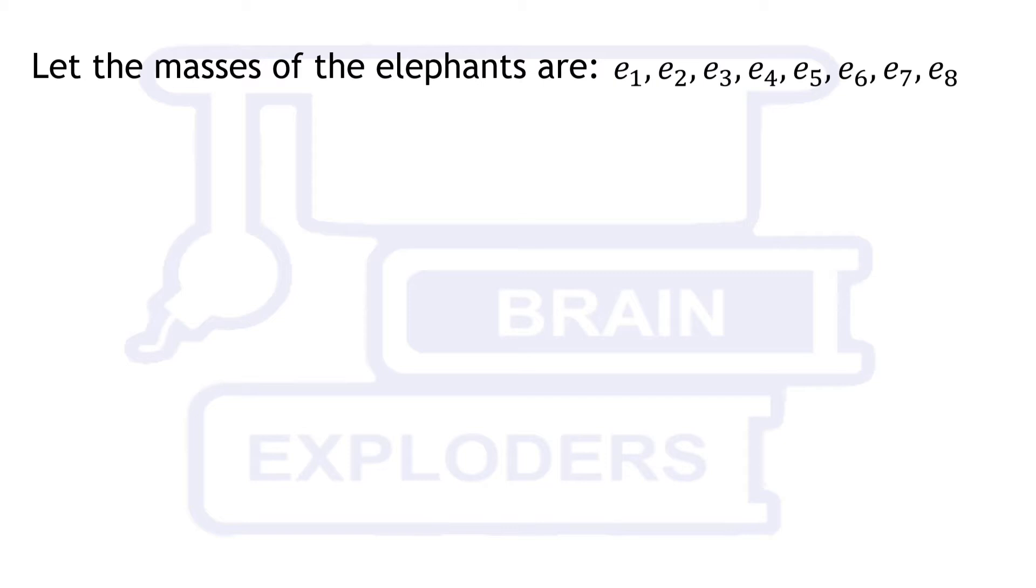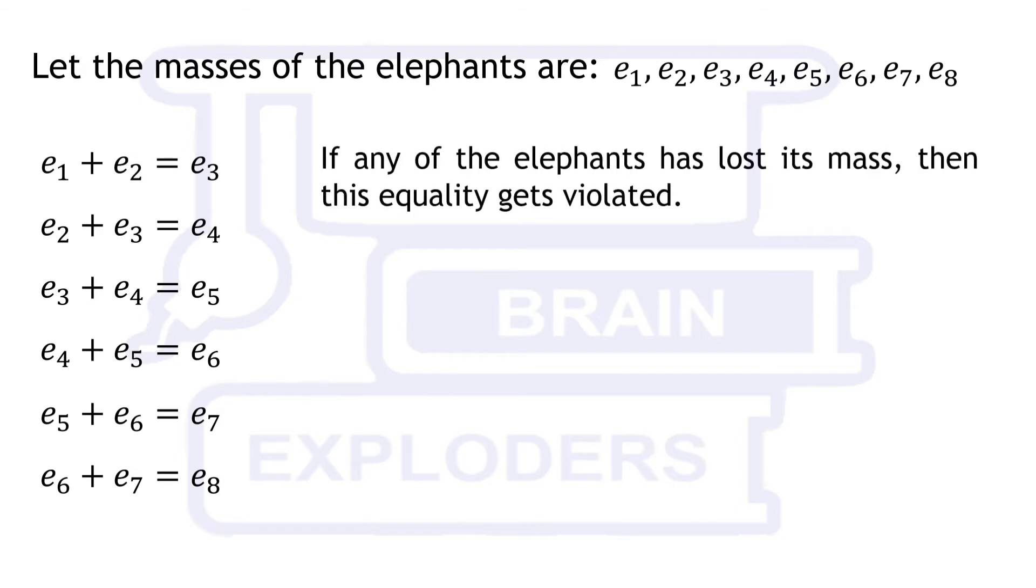If no elephant has lost its mass then starting from third, mass of each elephant is equal to the masses of two preceding ones, so e1 plus e2 is equal to e3, e2 plus e3 is equal to e4 and similarly for other elephants also. But if any of the elephants has lost its mass then this equality gets violated.